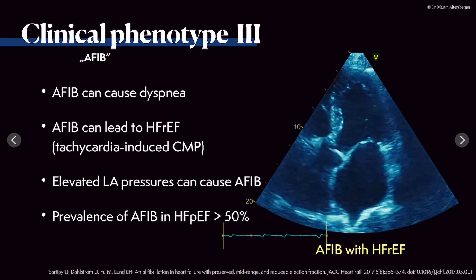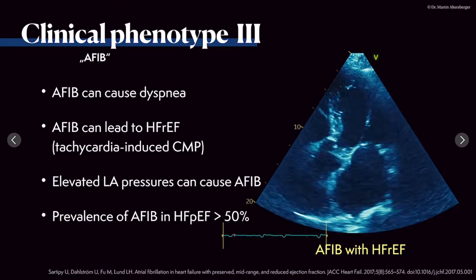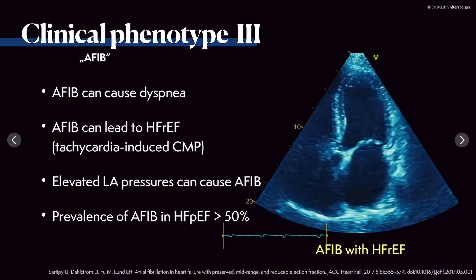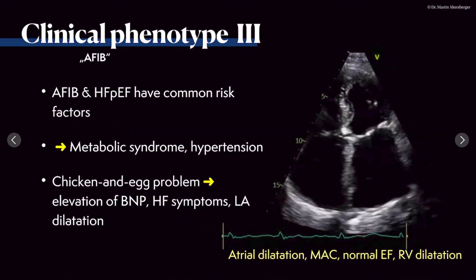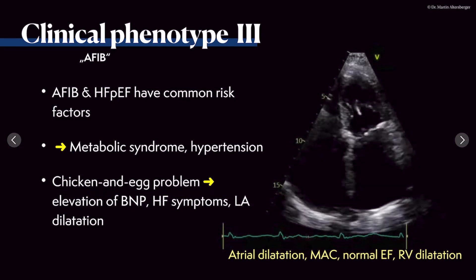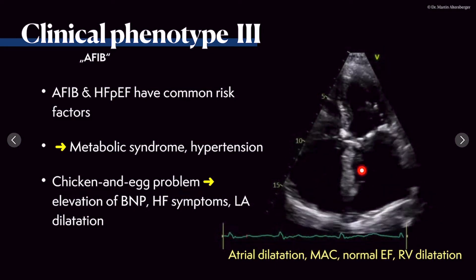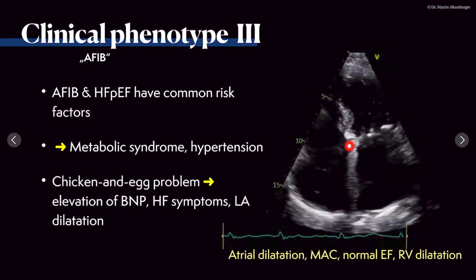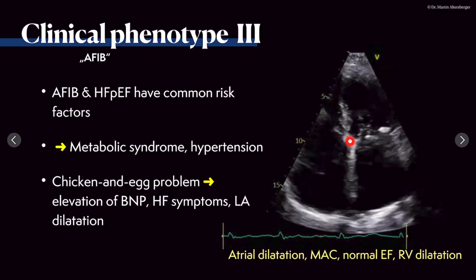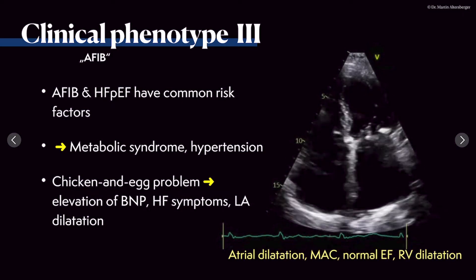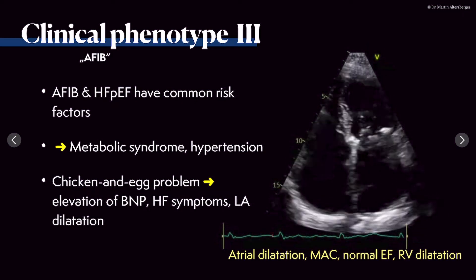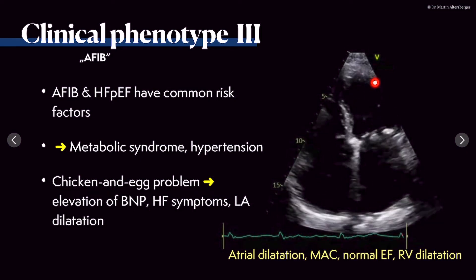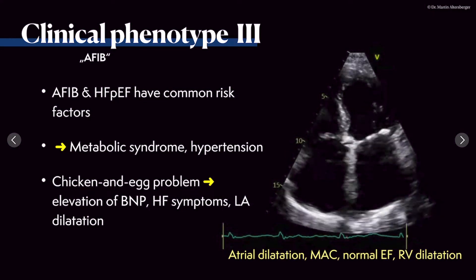It's important to note that in heart failure with preserved ejection fraction, the prevalence of atrial fibrillation is fairly high. In this patient who also has atrial fibrillation, we do see the enlarged right and left atrium, the calcified valves, even calcifications at the beginning of the LVOT — so also the aortic valve is calcified — but left ventricular function in this case seems preserved, in the range of 50% in this apical four-chamber view.